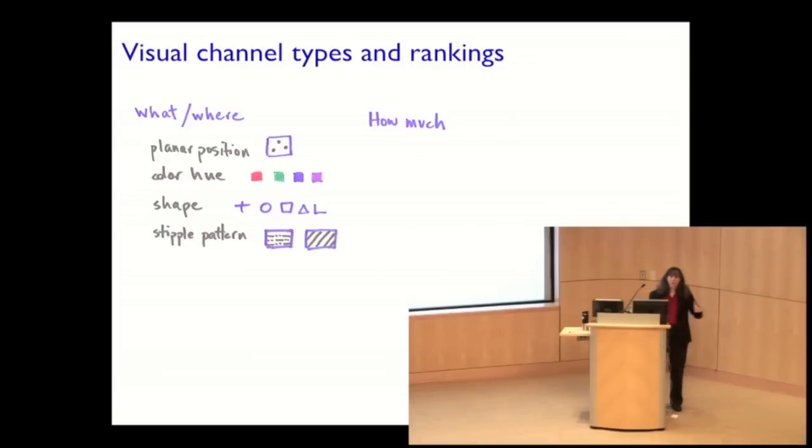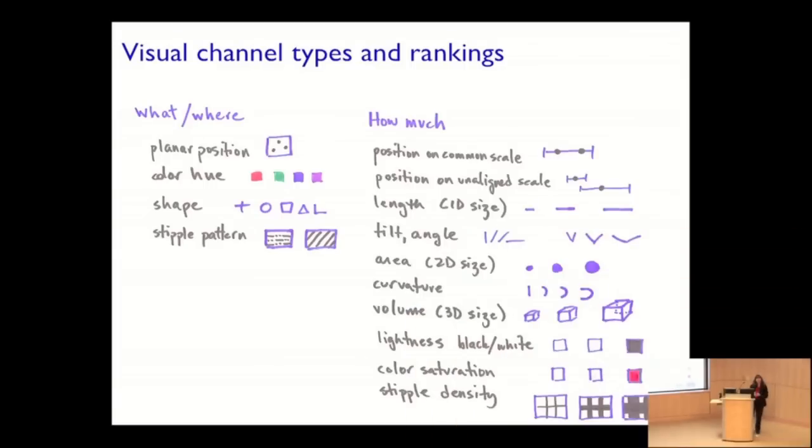In contrast, there are other visual channels, in fact pretty much all the rest of them, that don't tell us what something is. They tell us how much of something. So we're also seeing things like position either along a common scale or an unaligned scale. And so position can tell us, you know, how much of something there is? Is this length longer or shorter than another? So we have length. We have things like or how much tilt does something have? How large is the angle? So how much is the size of something? So there's area, curvature, volume, things like notice how I've actually separated out color here.